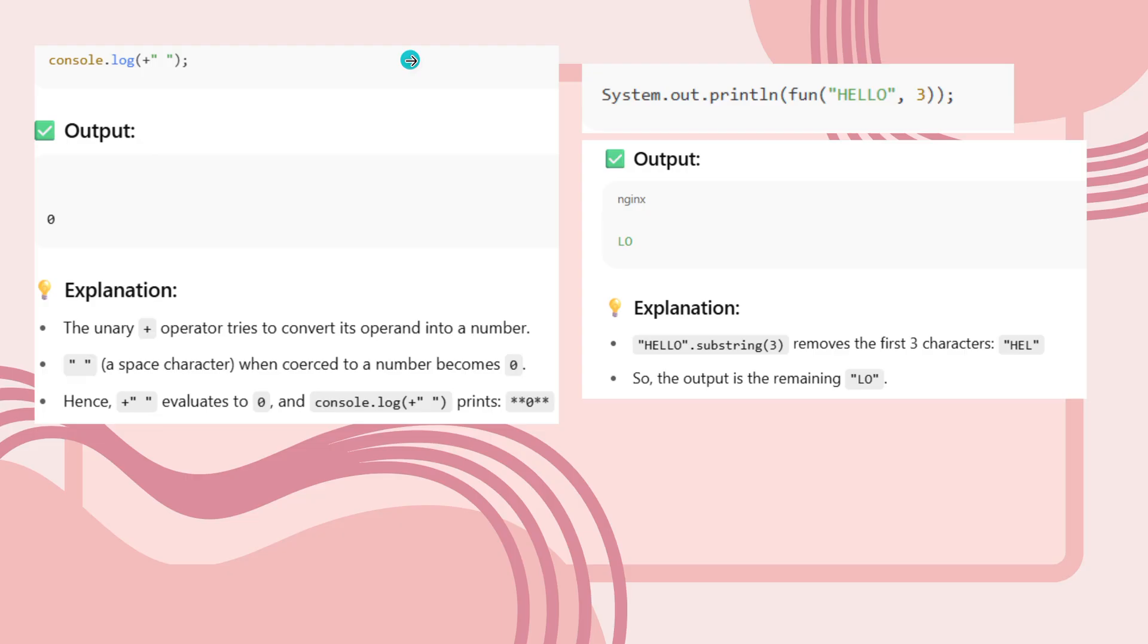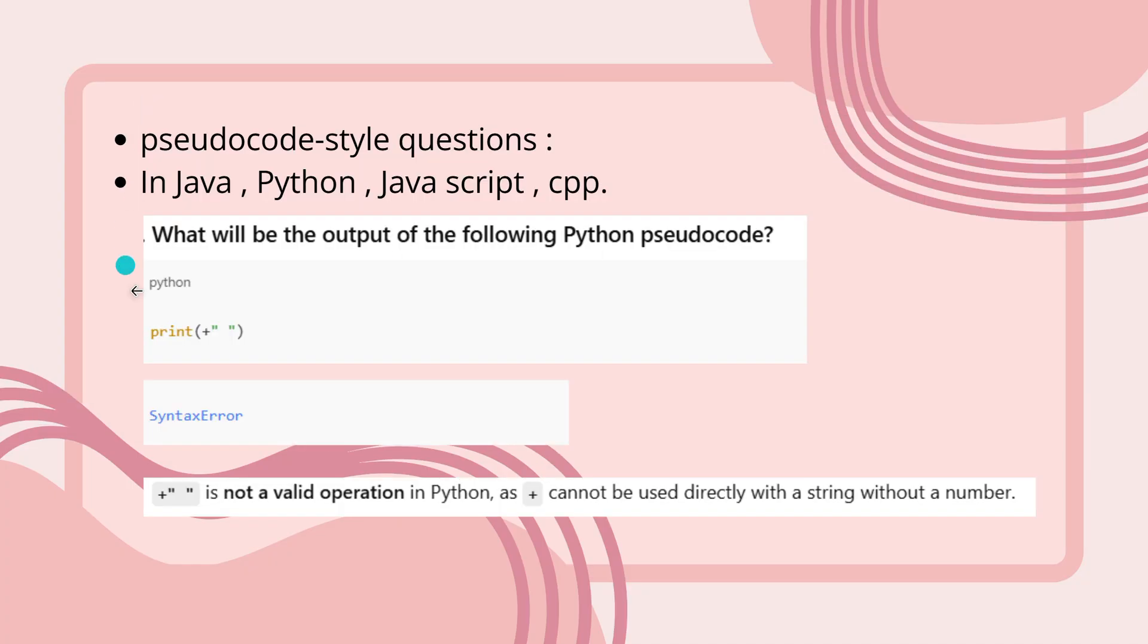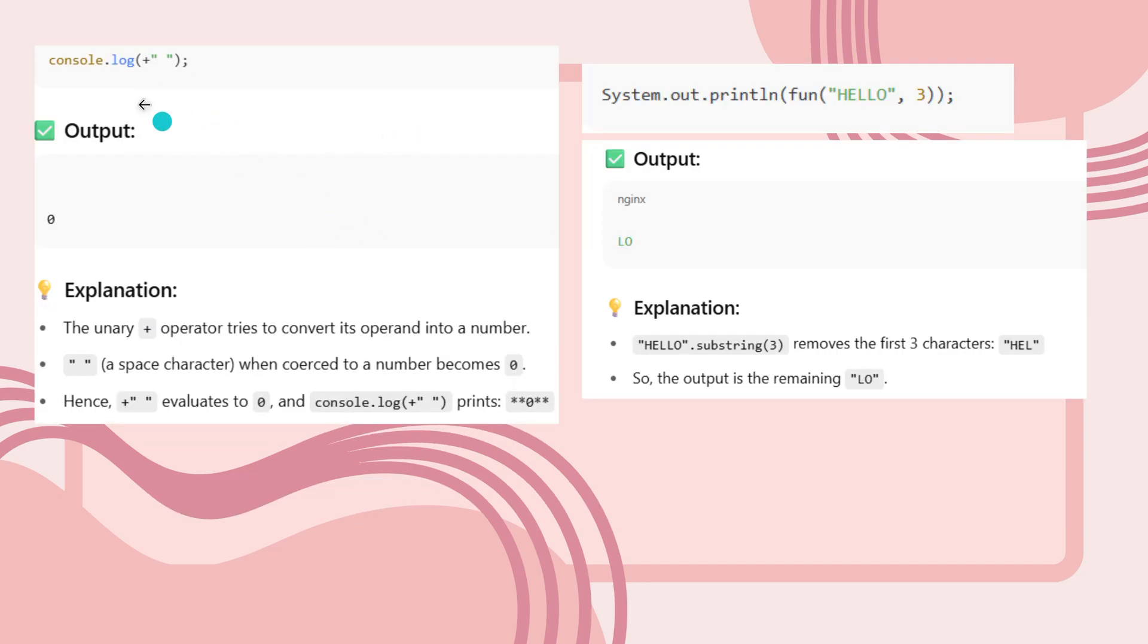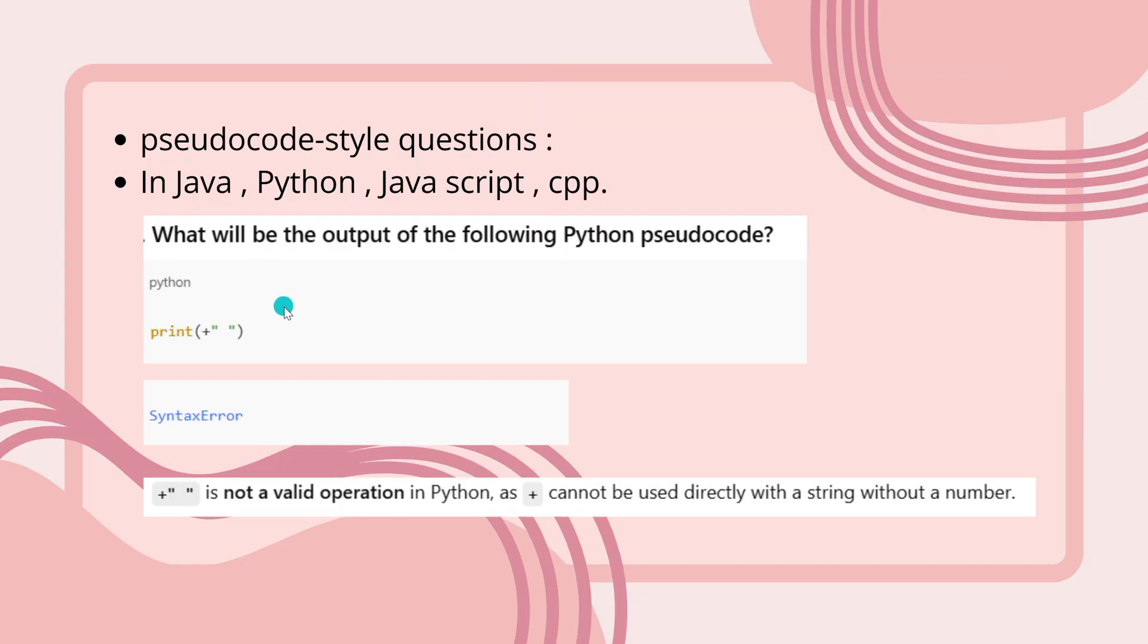This is a question I faced during my exam in JMAN. Console.log(+ empty string). The output is zero. Console.log—the unary operation plus operator tries to convert its operand into a number. It's a space character, which when converted to a number becomes zero. Hence, it evaluates to zero. Console.log(+) prints zero, so the output is zero. See, console.log here versus print plus—there's a differentiation between them. Be careful while reading things. That's why I've given you this example.